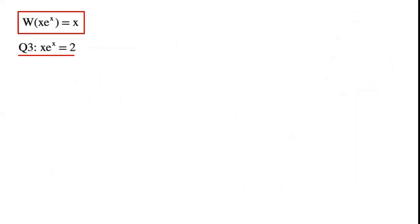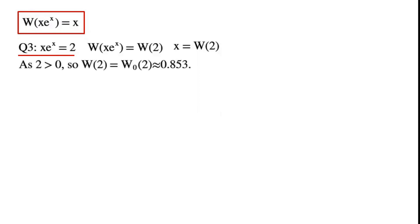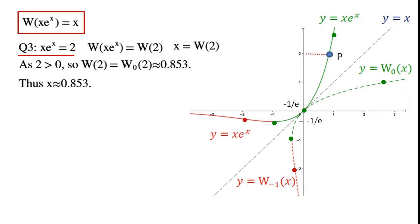We'll solve the equation x·e^x equals 2. We take the Lambert W function on both sides. The left-hand side equals x, so x equals W(2). Since 2 is greater than 0, W(2) equals W₀(2), which is approximately 0.853. Thus x is approximately 0.853. We just solved the equation algebraically.